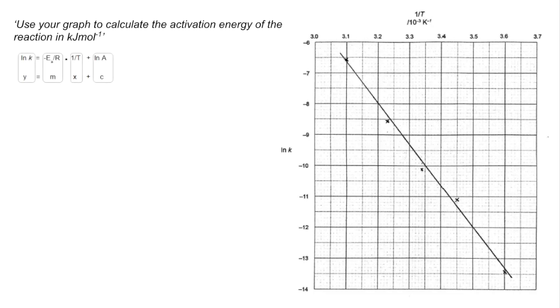So there's the reminder of the logarithmic form of the equation with the y equals mx plus c next to it, and a reminder that the gradient is minus Ea over R. So the first thing you do is construct your triangle and work out your dy and your dx and calculate the gradient.